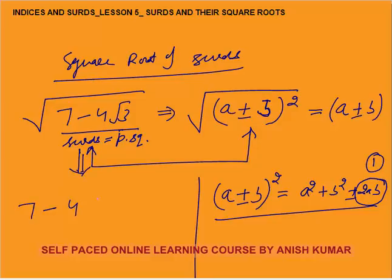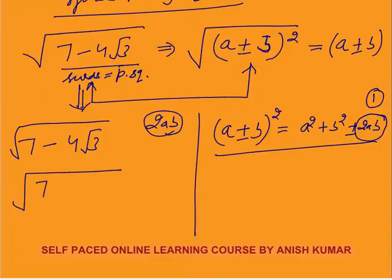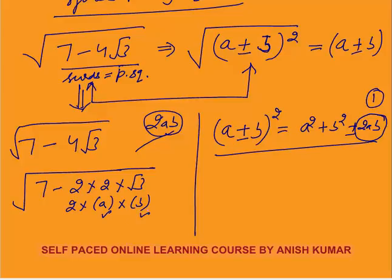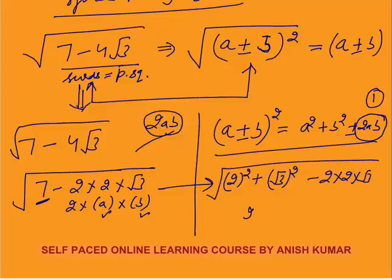I will solve 7 minus 4 root 3. First I find 2ab. I convert this as 7 minus 2 times 2 times root 3, so a equals 2 and b equals root 3. Next I check a squared plus b squared: 2 squared is 4, root 3 squared is 3, and 4 plus 3 is 7. The answer is confirmed. So 7 minus 4 root 3 equals 2 squared plus root 3 squared minus twice of 2 times root 3, which is 2 minus root 3 whole square. The square root is 2 minus root 3. You can solve this in less than 30 seconds.